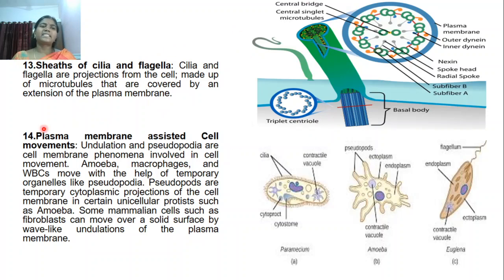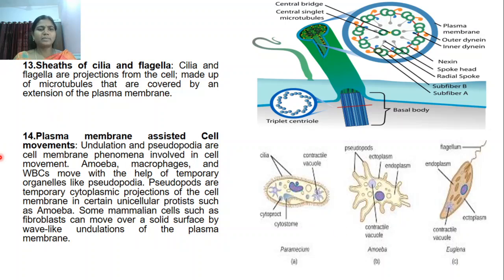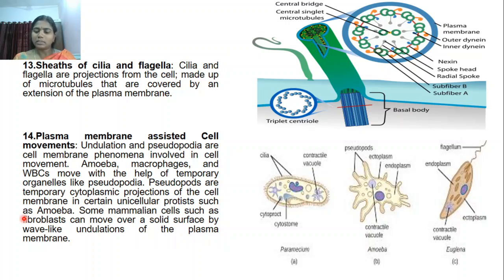The plasma membrane can extend to form sheets of cilia or flagella that project from the cell, helping in motility. The plasma membrane also assists in movement in lower organisms where undulation and pseudopodia are involved in cell movement. Amoeba, macrophages, and white blood cells move with the help of temporary organelles like pseudopodia — temporary cytoplasmic projections in which unicellular protista, amoeba, and some mammalian cells like fibroblasts move on solid surfaces. Wave-like movement called undulation of the plasma membrane is also considered an extension of plasma membrane function related to motility.